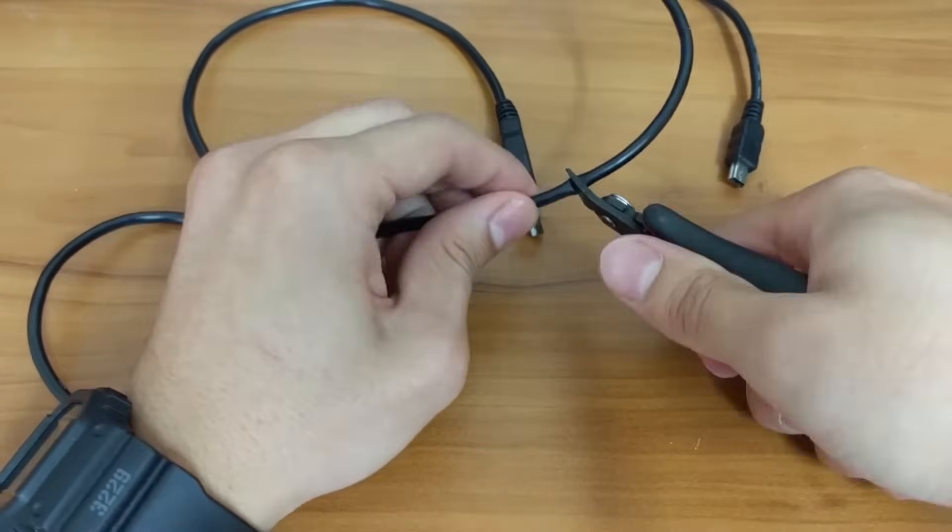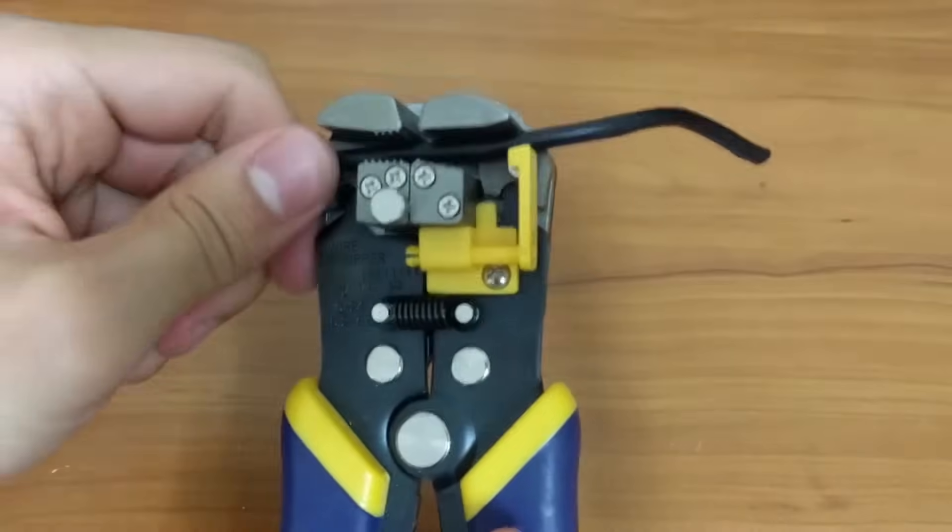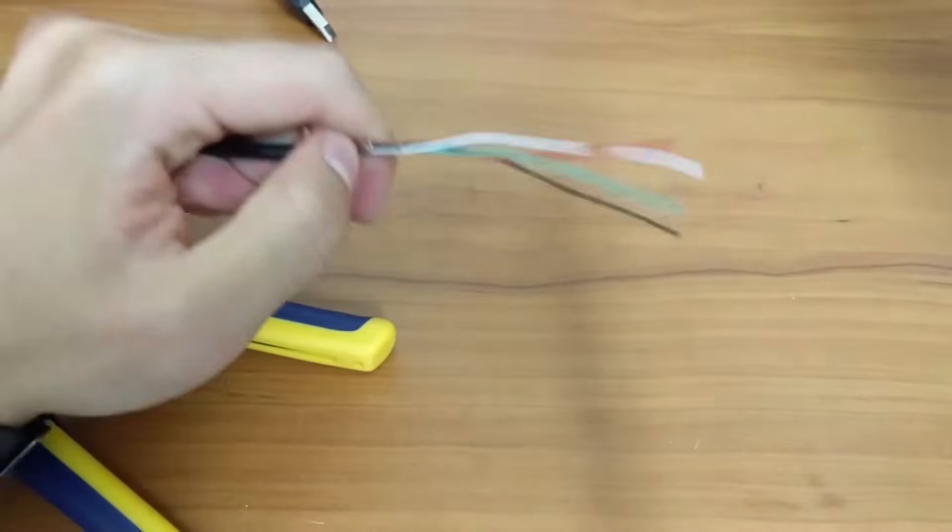Start by clipping your USB cable to the desired length. Then strip the wires to reveal the inner cables.